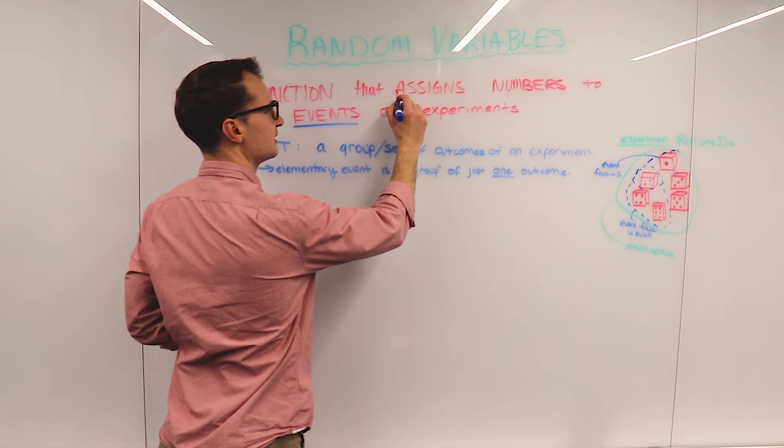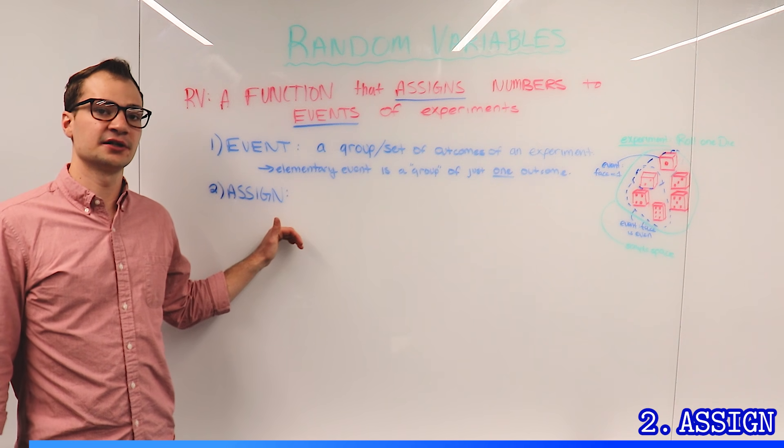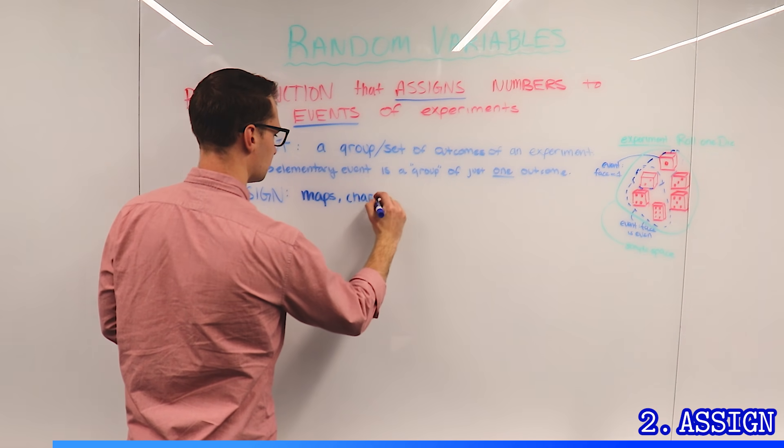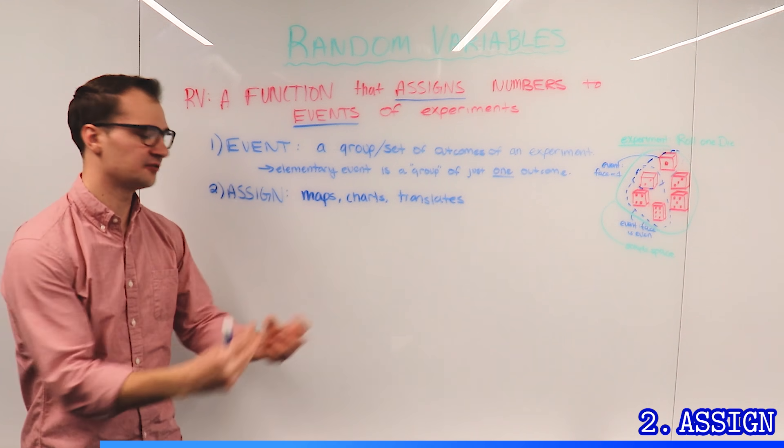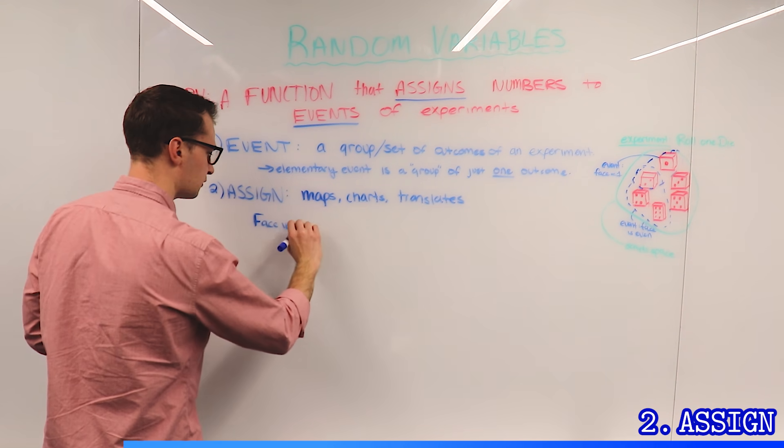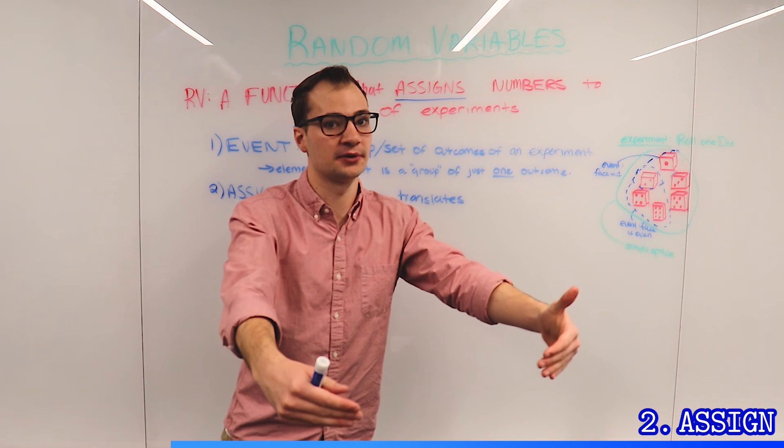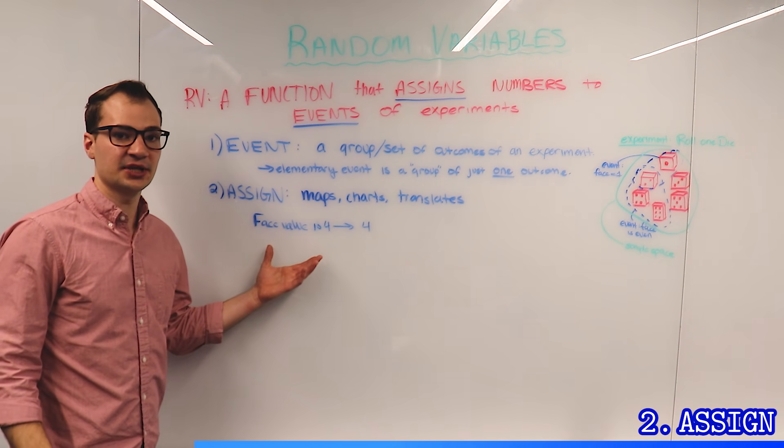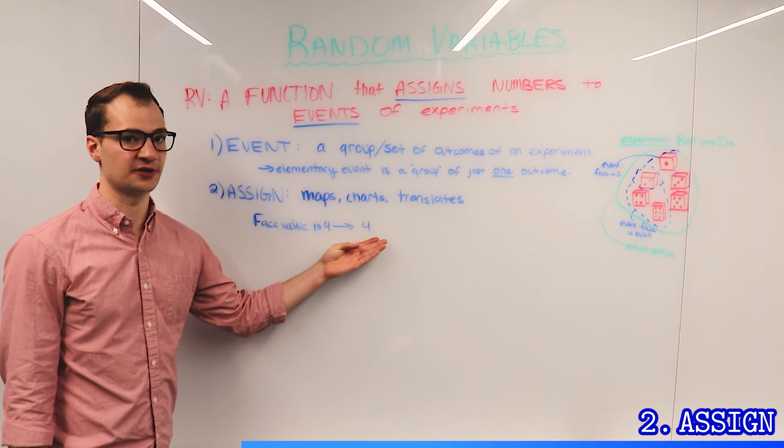Another word for assign could be maps, charts, or translates. This is the act of taking an event, taking a face value of 4 and translating it into an actual number. So we take, in some cases, a qualitative event and turn it into a quantitative value.